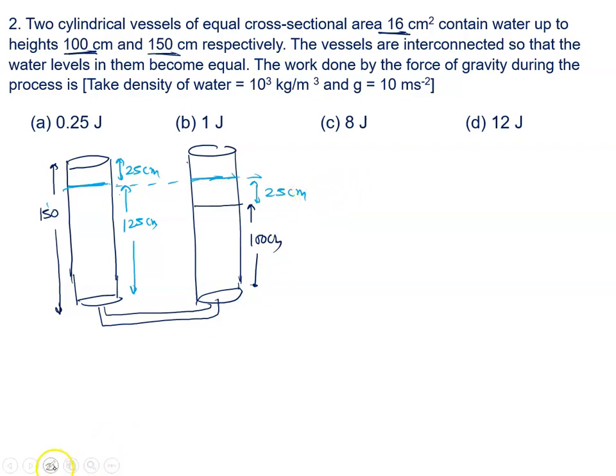And what is the work done by gravity? W gravity is given by force into displacement. Force, what is it? Mass into gravity into displacement. Mass, what is it? Density into volume. Volume is given by area of cross-section into h into gravity into displacement.